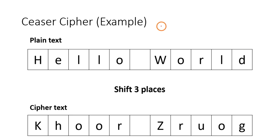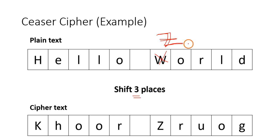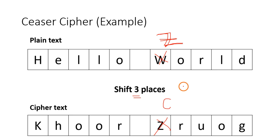The second case is when the plain text character is 'Z' — the last letter of the alphabet. If you shift 'Z' by 3 places, there are no more letters, so you wrap around to the beginning: after Z comes A, B, C — so you get 'C'. Both conditions must be handled in the code: when the key is greater than 25, and when shifting goes beyond 'Z'. We will see how to handle these in the program.